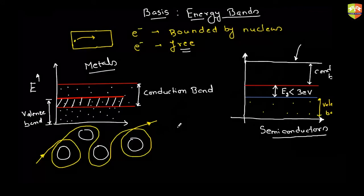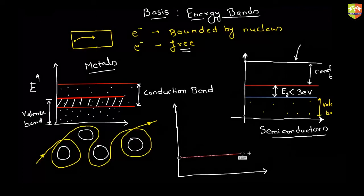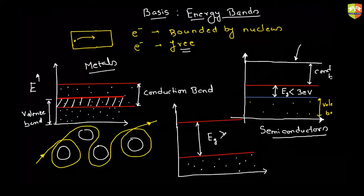Now for nonmetals: the energy gap is quite large. The valence band holds all the electrons, and there is a huge gap between the valence and conduction bands. For nonmetals, EG is way above 3 electron volts. This energy band classification gives more insight into how semiconductors behave compared to conductors and insulators.